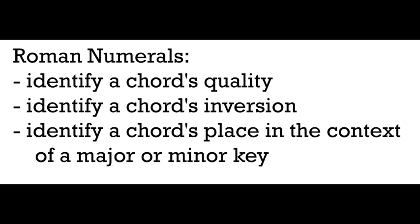Roman numerals allow us to do a couple things. They allow us to very efficiently describe the chord's quality — we already know about the difference between major and minor triads, and the difference between fully and half-diminished seventh chords. Roman numerals also help us identify a chord's inversion — what note is in the bass, what note is the lowest in a chord. But Roman numerals do one other thing we haven't been able to do yet: identify a chord's place in the context of the music's key, that major or minor key. Roman numerals give us the sense of how the chord fits into the big picture, and that is going to be really, really important going forward in putting together a big picture sense of harmony in music.